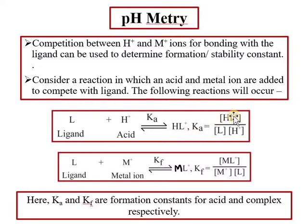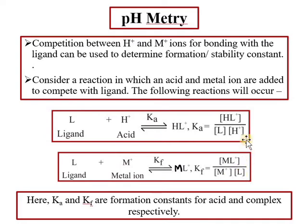The formation constant for the acid is the concentration of HL+ upon the product of the concentration of ligand and hydrogen ion. If a metal complex forms, the formation constant is the concentration of the complex upon the concentration of metal ion and concentration of ligand. We thus get two relationships. Previously, using spectrophotometry, we calculated the formation constant with metal and ligand alone.